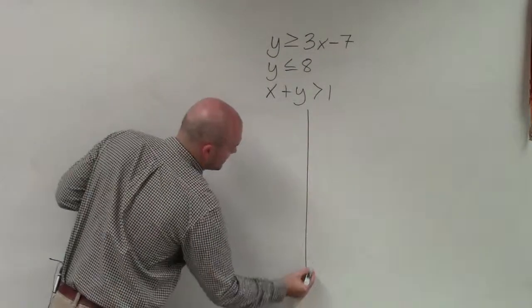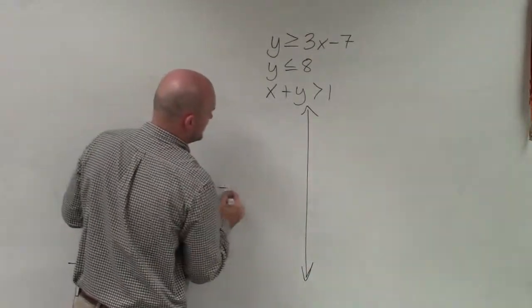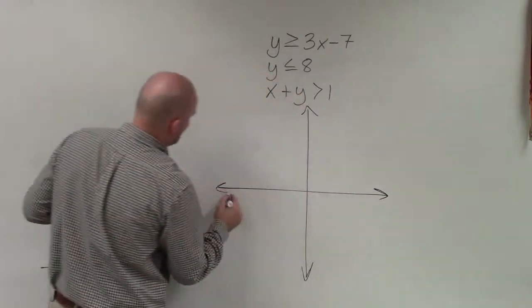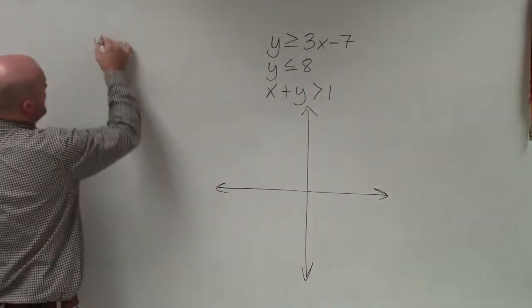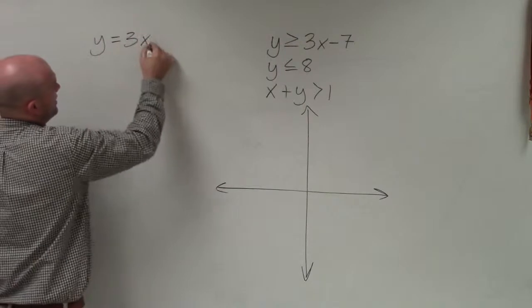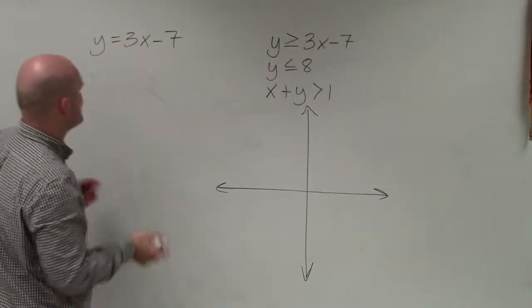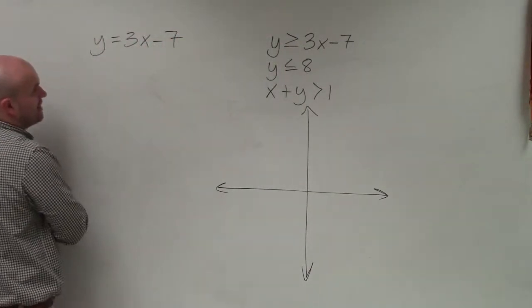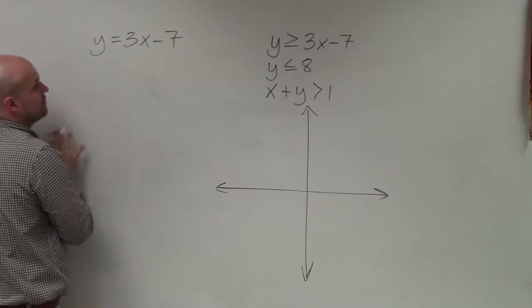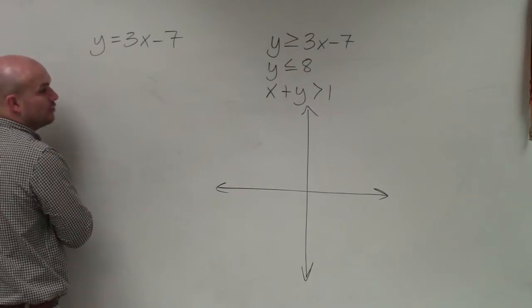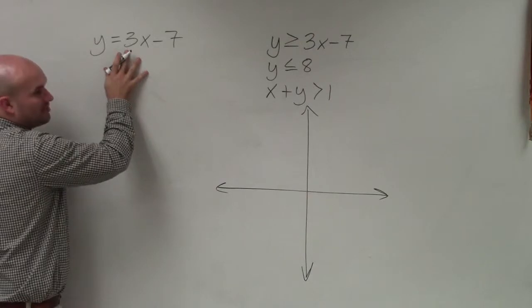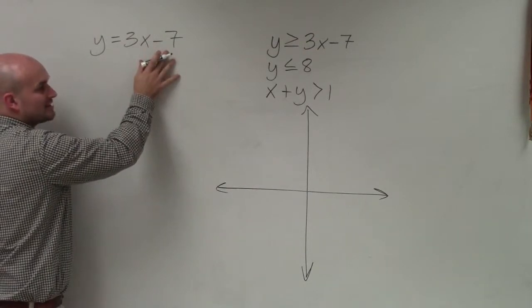So the first one I'd like to kind of get started with, and I'm going to graph these. Again, when we're graphing inequalities, we like to a lot of times just graph them as an equation. Because basically, the process is going to be exactly the same. So when we look at graphing this equation, basically what I want to do is make sure we identify what the slope is and the y-intercept. So the slope in this case is going to be 3, and the y-intercept is going to be negative 1.